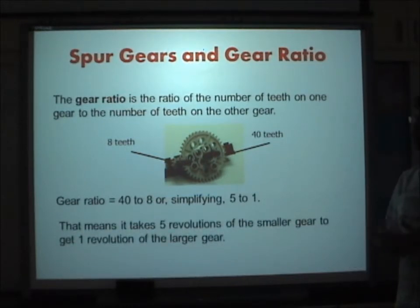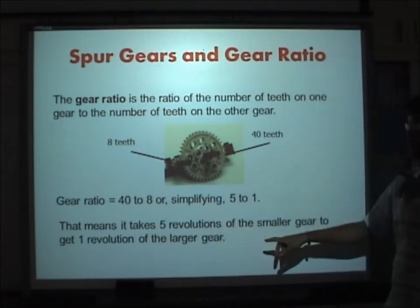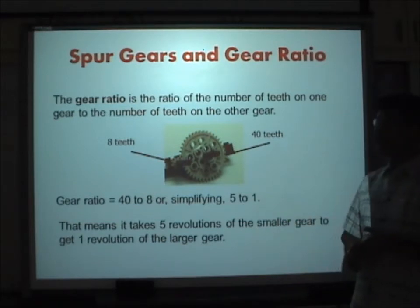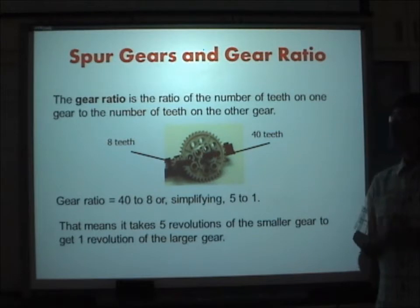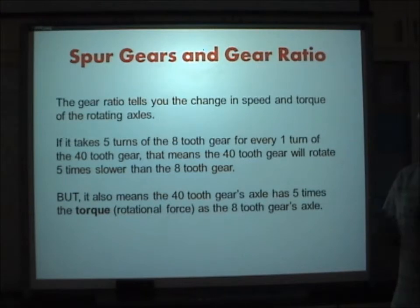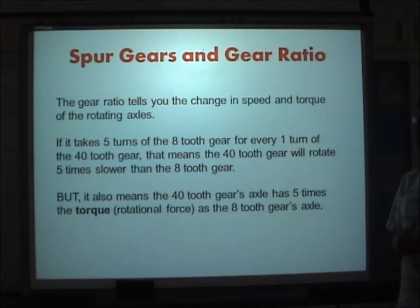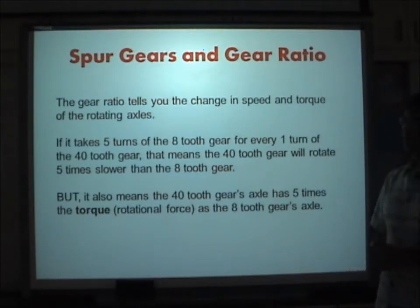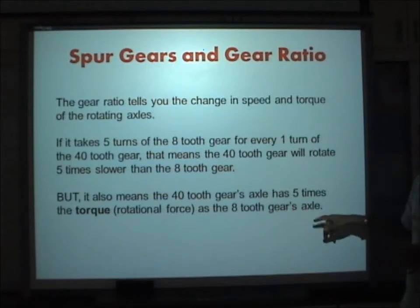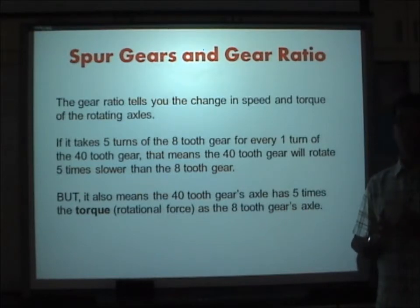A gear ratio of 5:1 means it takes five revolutions of the smaller gear to get one revolution of the larger gear. The gear ratio tells us the change in speed and torque. If it takes five turns of the 8-tooth gear for every one turn of the 40-tooth gear, the 40-tooth gear rotates five times slower but has five times the torque — the rotational force — of the 8-tooth gear.